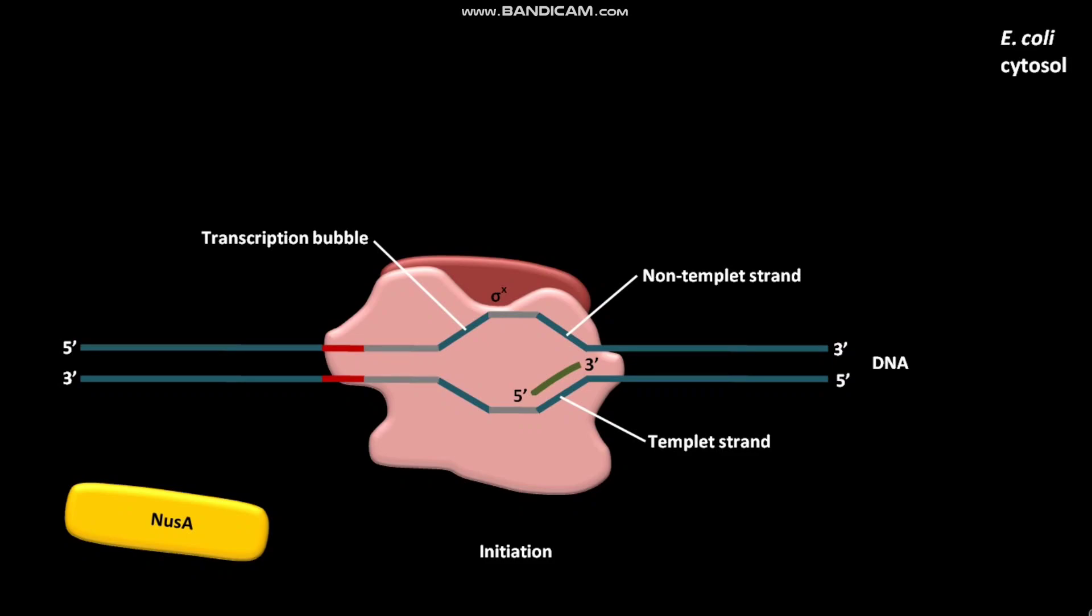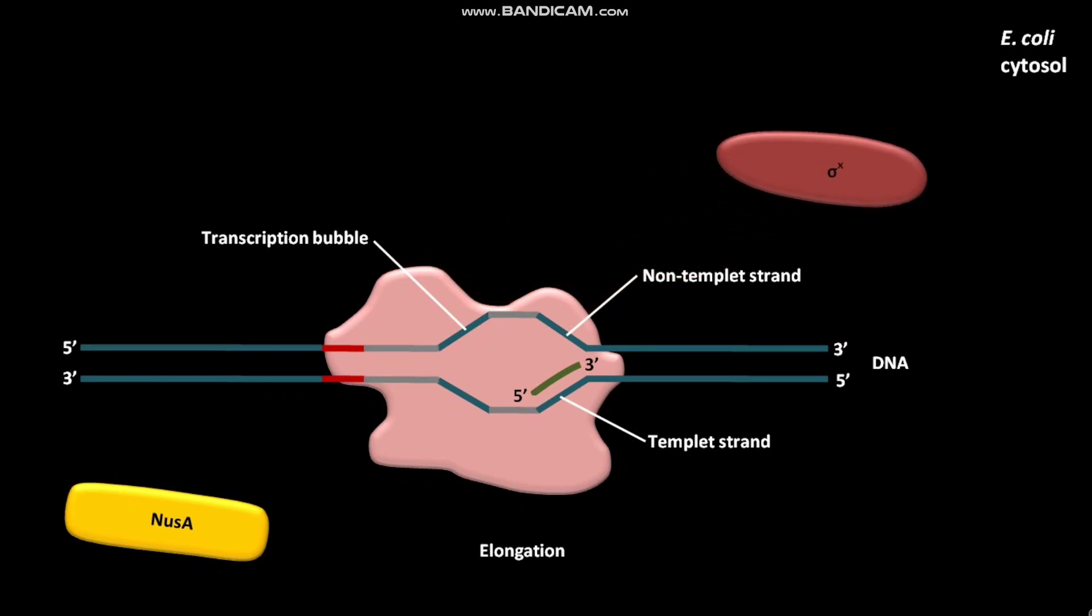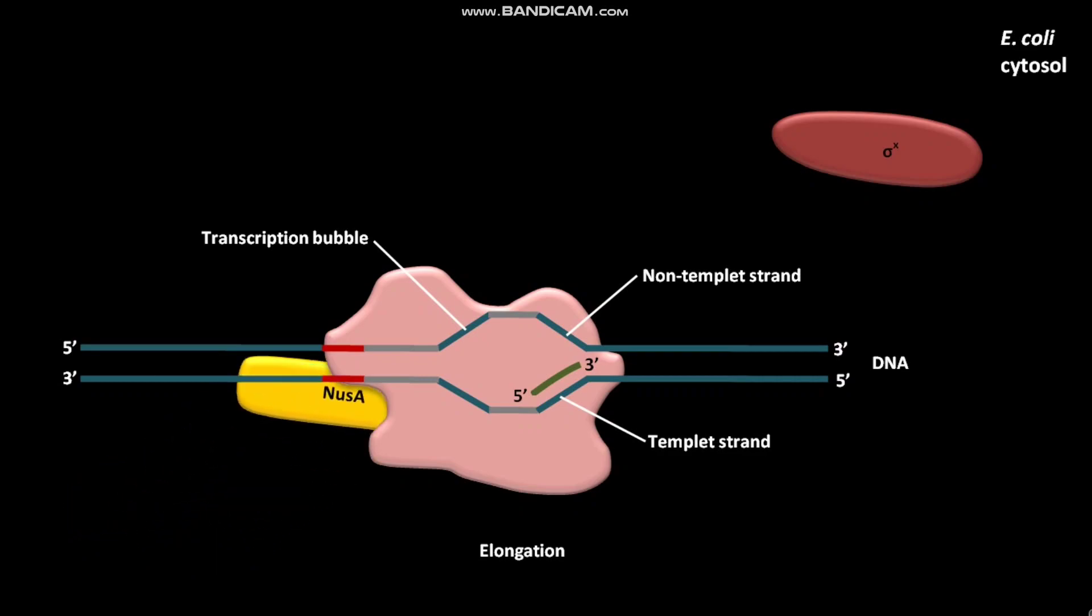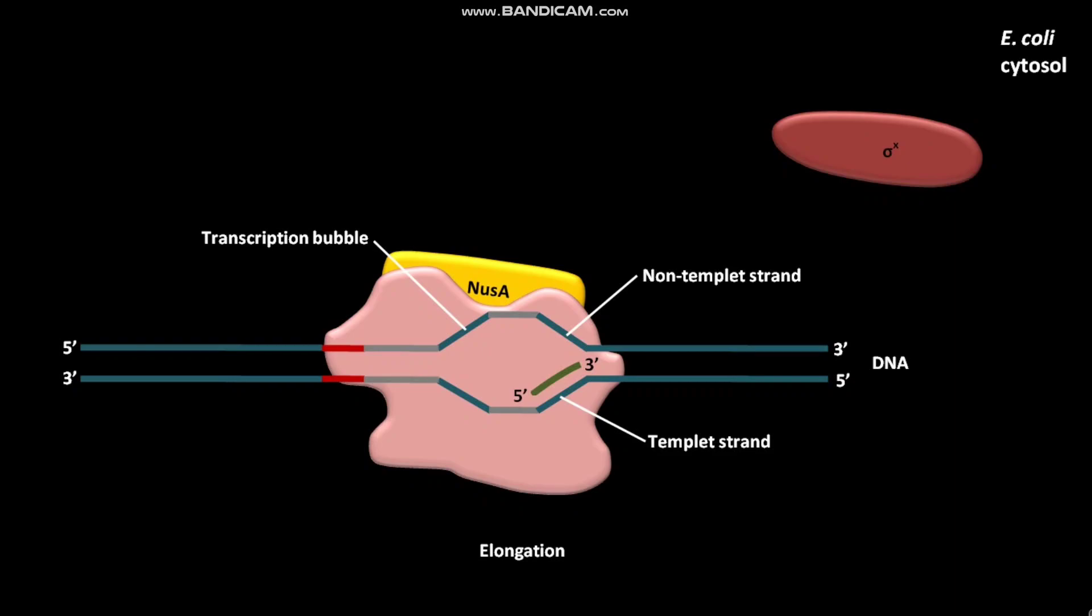meaning transcription elongation is initiated, the σx subunit dissociates stochastically. This σ subunit is replaced by NusA. In the NusA bound state, RNA polymerase continues elongation.